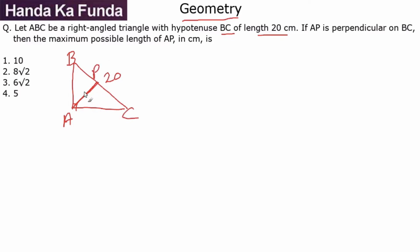then the maximum possible length of AP will be how much? Now one of the things that you can do is you can try to visualize this. If suppose these two sides, the perpendicular sides, are very different and I keep the hypotenuse as the same, so this is the hypotenuse which is 20,